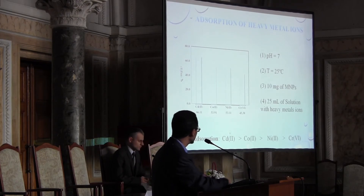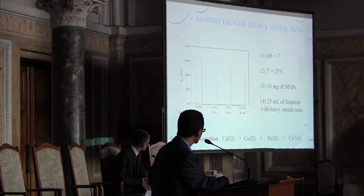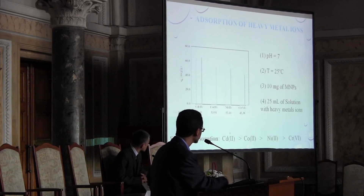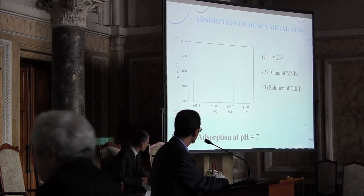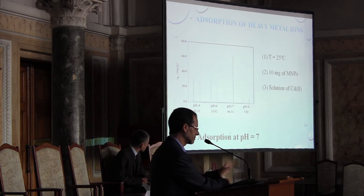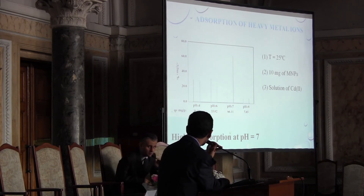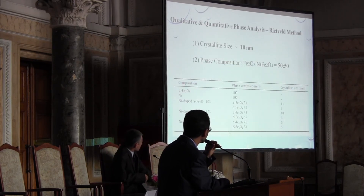Magnetic property measurements confirm the phase transformation: goethite is paramagnetic while magnetite is ferromagnetic, which is needed for magnetic separation. We demonstrate selective adsorption of heavy metals. After optimizing pH and temperature, we tested selectivity for cadmium, cobalt, nickel, and chromium. pH 7 was confirmed as convenient for heavy metal removal.